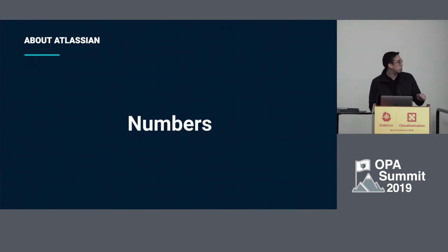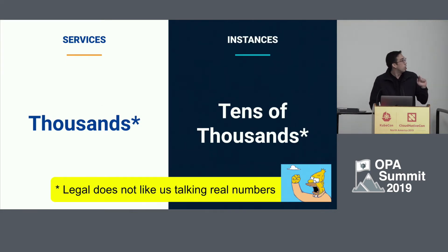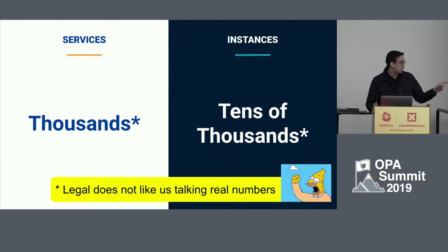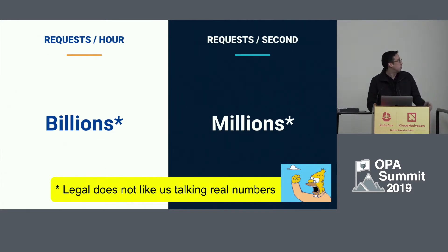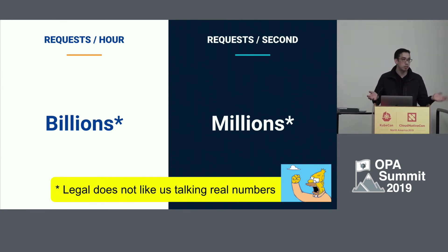To give you some quick numbers: we run services in the thousands, and we have tens of thousands of instances. Requests per hour: billions. Requests per second at peak: millions. That's across our clusters of services.